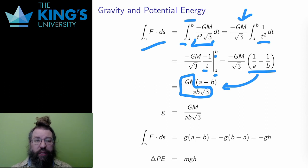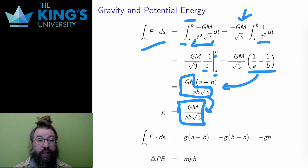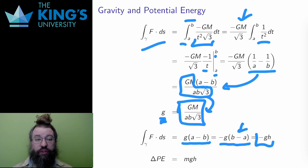So let me call this whole expression lowercase g, which I am treating as a constant. Then the result of the line integral is lowercase g times (a-b). And if I pull out a negative, this is -g(b-a). And b-a is precisely the height gained, so this is -gh, for h the height gained by the movement.